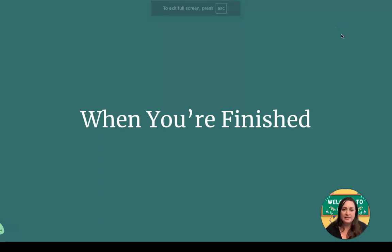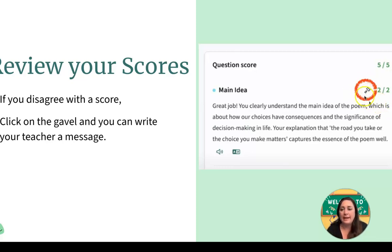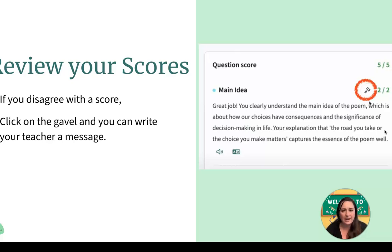After you've submitted all the parts for Class Companion's writing benchmark, you're going to be given a score. It takes some time to review your score. Read what Class Companion has recommended that you change next time. If you disagree with a score and you think the AI got it wrong, you can let your teacher know by clicking on the gavel — a little hammer that's circled here in red. When you click there, you can write a message to your teacher. This is called a dispute and your teacher will be notified.